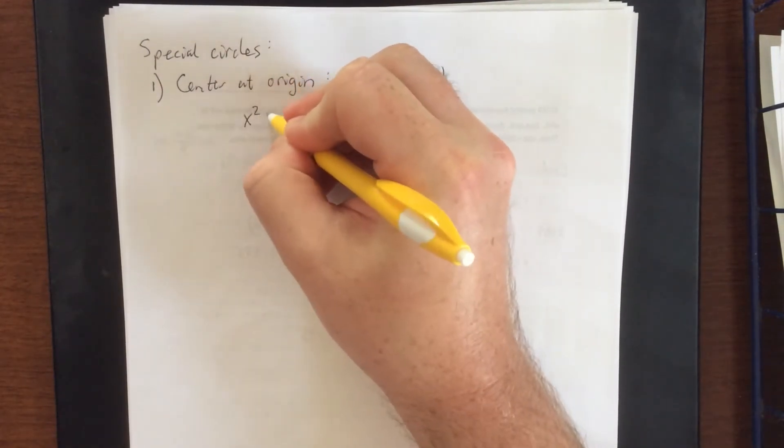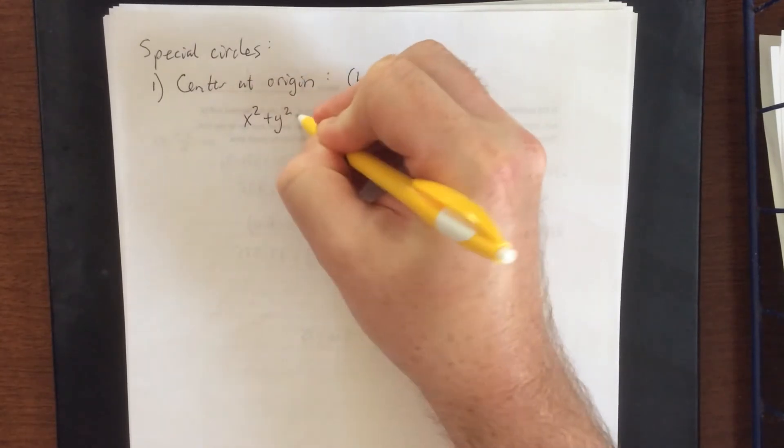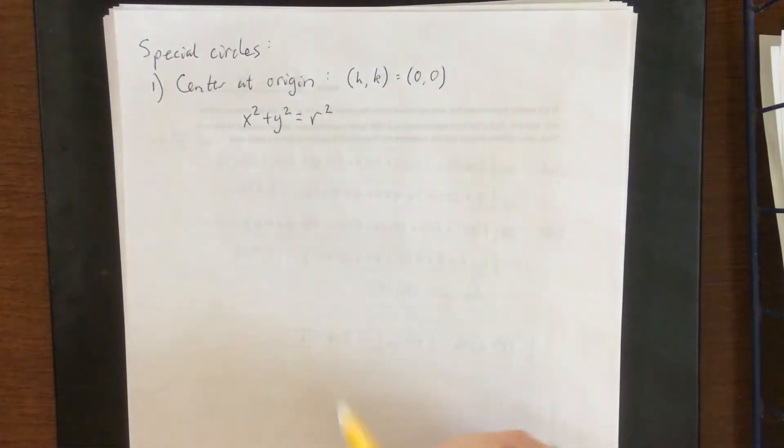But instead of saying minus 0 in both of those cases we'll just refer to it as this: x squared plus y squared is equal to r squared.